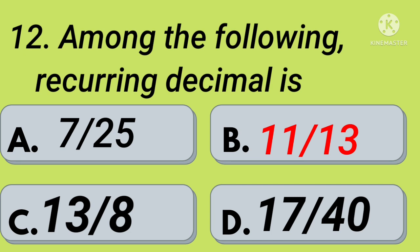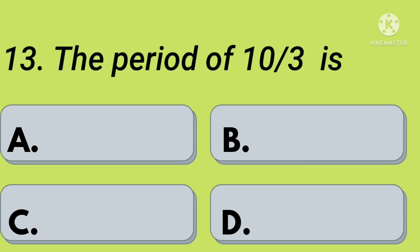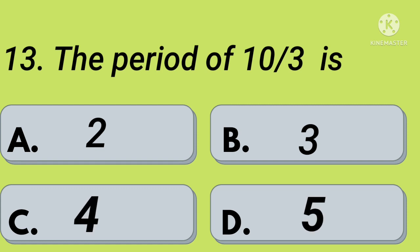Thirteenth question: the period of 10 by 3 is — option A: 2, option B: 3, option C: 4, option D: 5. Your time starts now. Option B: 3.